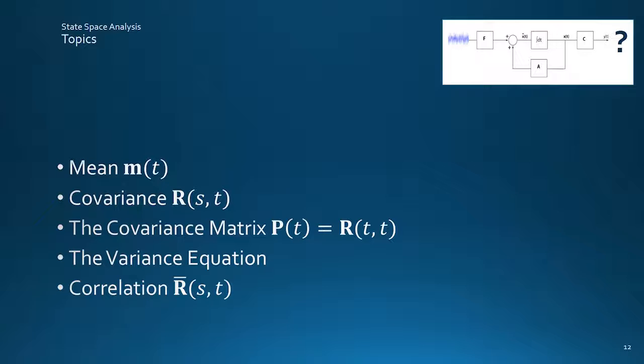We'll look at solutions for the mean and covariance function, and then go on to the covariance matrix and the variance equation, finally tacking on the correlation function to complete the picture. Of most interest, as a means of finding out how a system responds to noise though, is the variance equation, which solves to give the covariance matrix of system signal strengths.